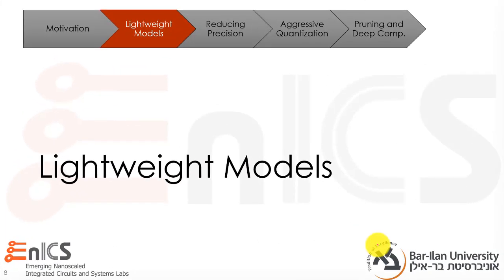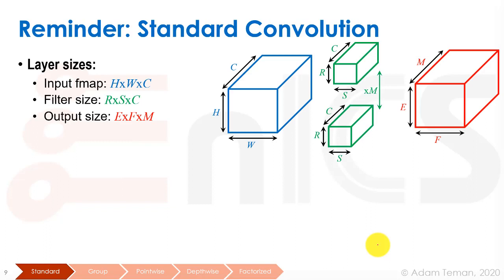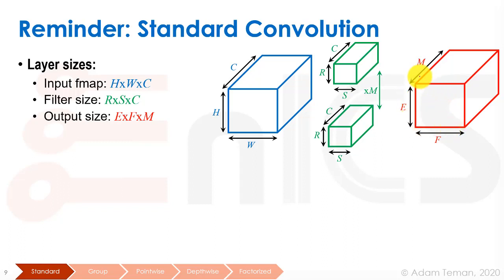The first thing we're going to look at is lightweight models. As a reminder of standard convolution, our input feature map is size H by W with depth or number of channels C. The filter size is R times S — so R times S in a two-dimensional kernel — and there are C channels, matching the number of input channels. Each filter gives one output feature map sized E by F, and if we have M filters, we get M output channels with depth M.